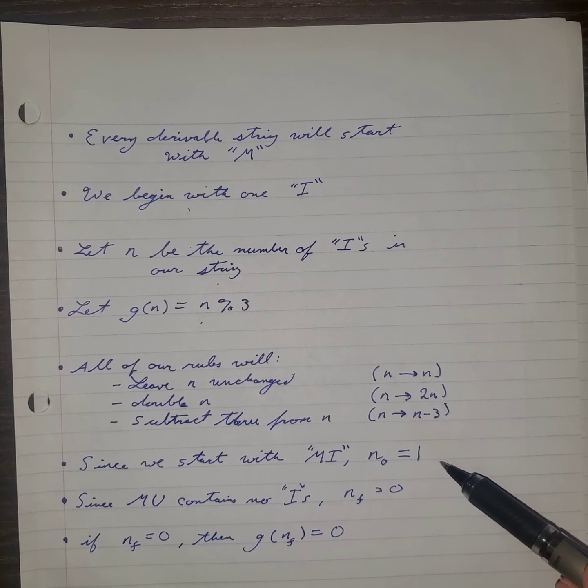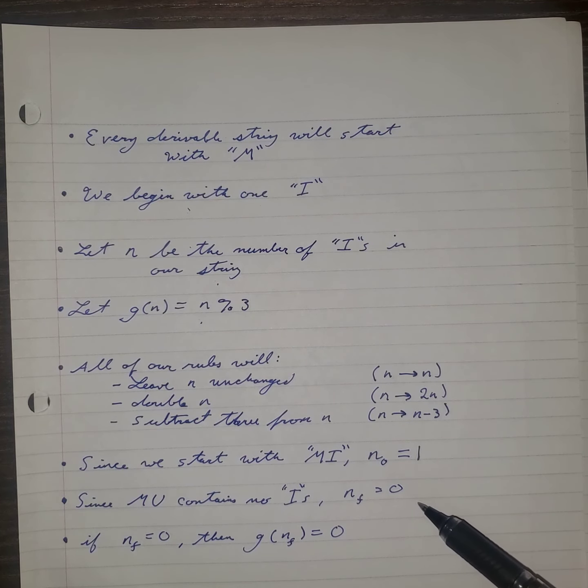Since we start with MI, our initial N must be 1, and since MU contains no I's, our final N must be 0.